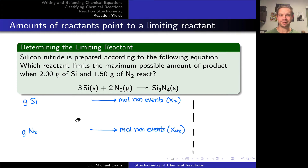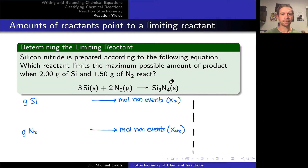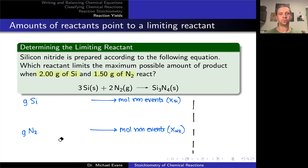Now that we've beaten the culinary analogies into the ground, let's look at a specific chemical example of a limiting reactant problem. We have a balanced chemical equation between silicon solid and nitrogen gas to form silicon nitride. Given 2 grams of solid silicon and 1.5 grams of N2, which reactant limits the maximum possible amount of product that can form — in other words, which is the limiting reactant?